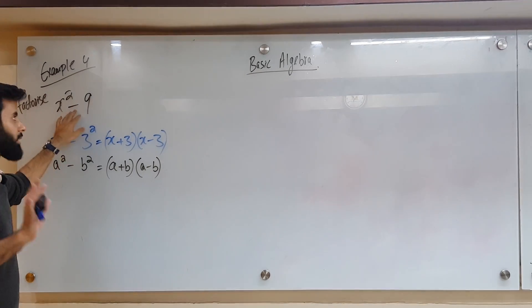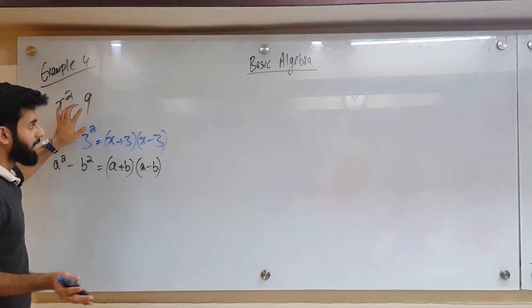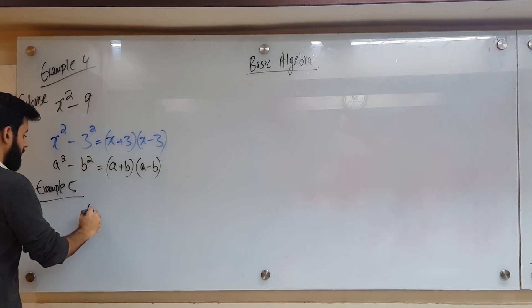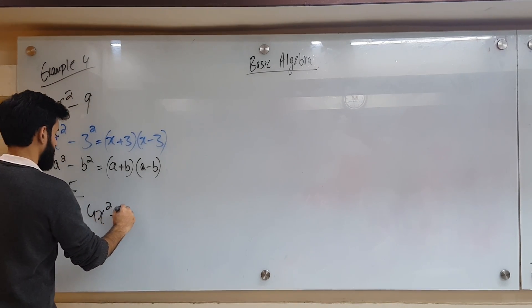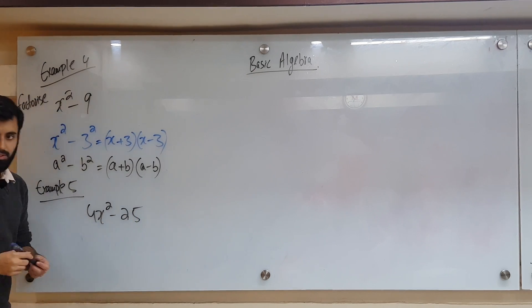If it is a plus sign, then we will not apply this identity. But if there are two perfect squares with a minus sign in between, then we will apply it. What if you have 4x squared minus 25 — can we factorize it?